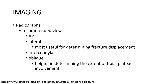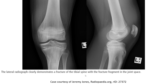Imaging diagnosis — radiograph: the recommended views are AP and lateral, with the lateral view being most useful for determining fracture displacement. The intercondyline oblique view is helpful in determining the extent of tibial plateau involvement. This is an example of a tibial eminence fracture, or tibial spine fracture, clearly seen in the lateral radiograph, with the fragment visible in the joint space.